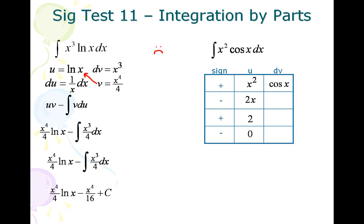dv is cosine x, antiderivative of cosine is sine, antiderivative of sine is negative cosine.